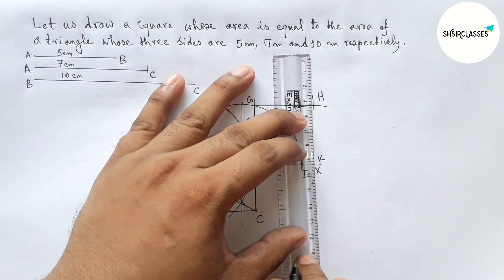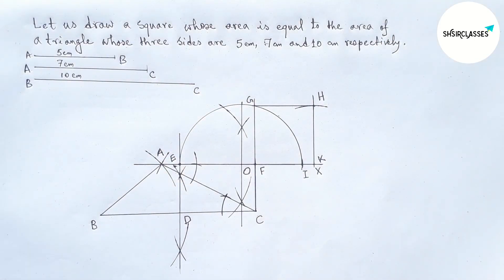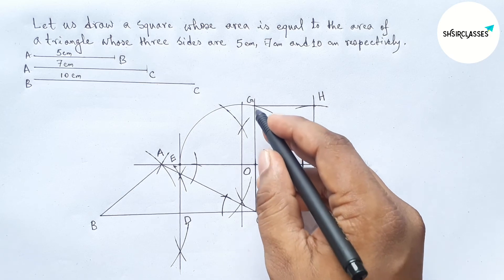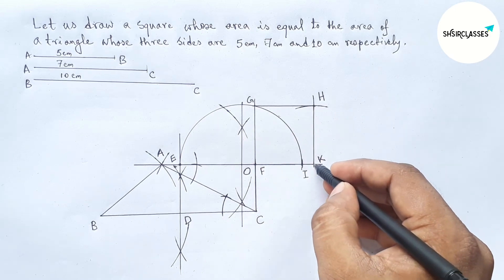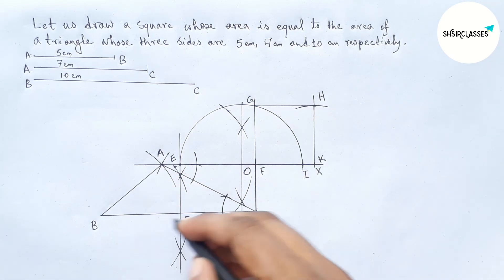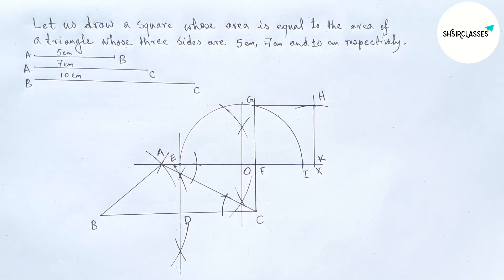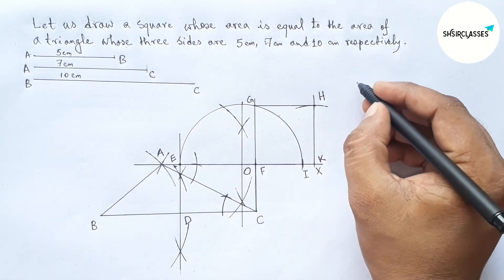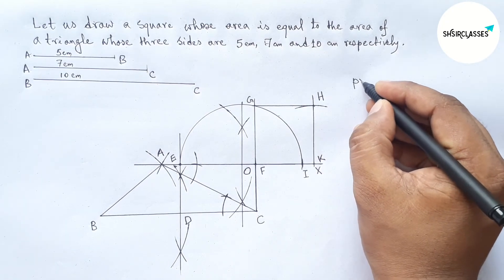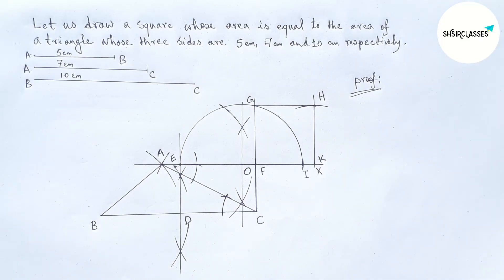Joining G and H, then joining H and K. So FGHK is our required square, and the area of the square and the area of the triangle are both equal. Now we have to prove this.